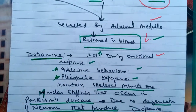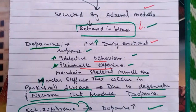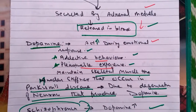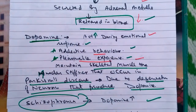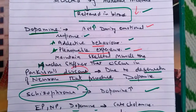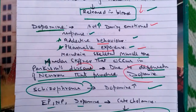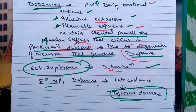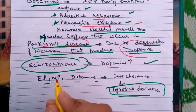Dopamine increases emotional aspects, addictive behavior, and pleasurable experience. In addicted persons taking a drug regularly or in large amounts, the dopamine level is enhanced. Dopamine also maintains skeletal muscle tone and keeps the body active. Loss of dopamine-producing neurons causes Parkinson's disease, a neurodegenerative condition. Schizophrenia is associated with an increased level of dopamine, where body activities become uncontrolled and very fast.